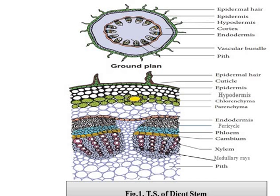This is the figure showing the transverse section of Dicot Stem. I have not kept the writing part in the slides, so if you want to make notes, you may write down because I will explain in English as well. We are talking about the transverse section of Dicot Stem. You have to take a young twig or a young stem and take a thin section. If you look at it under the microscope, you will see a Dicot Stem in this way.